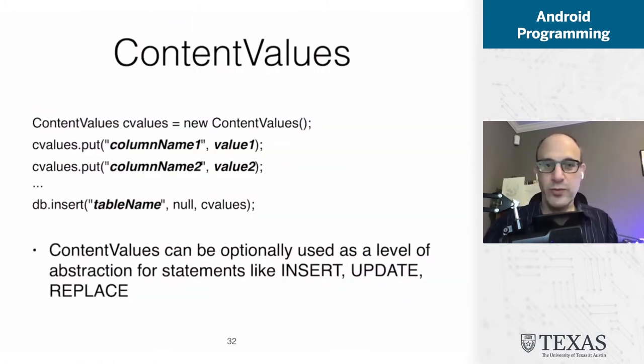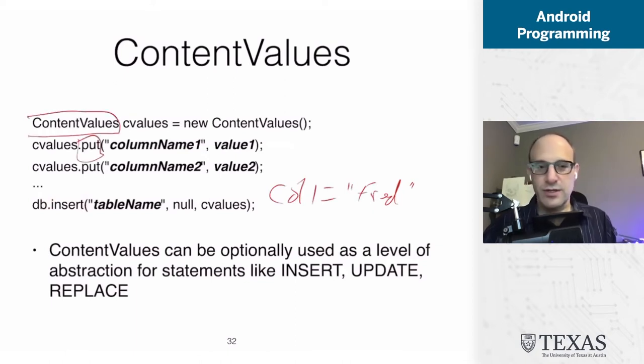Okay. So what do I mean by this? So in this case, we're doing an insert. So instead of creating an insert statement that says column one equals Fred, what we're going to do is we're going to create a content values object. And then we are going to put the elements that we want to insert into that object. So here we have column one. Here we have value one. And this might be a Boolean. This might be an integer. This could be a string, but this is a variable.